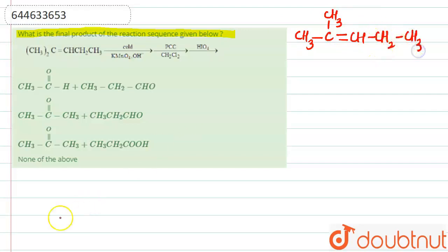Now the first reagent that is provided is cold KMnO4 in the basic solution. The role of cold KMnO4 is to convert the pi bond into diol. So here the pi bond will break and diols will be made.